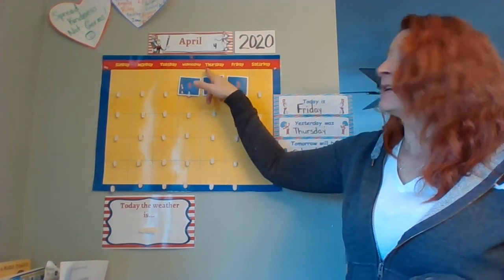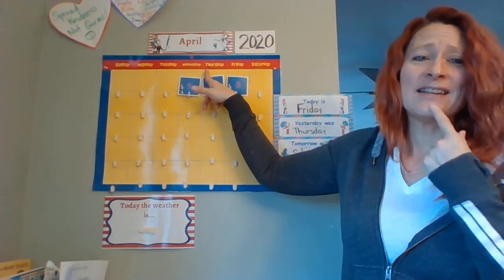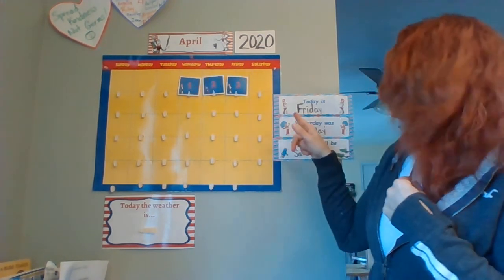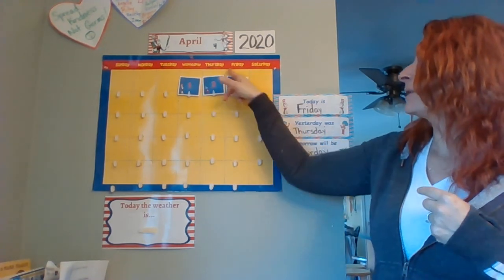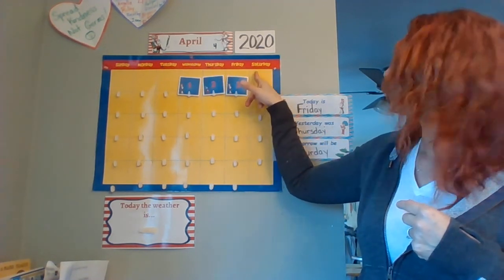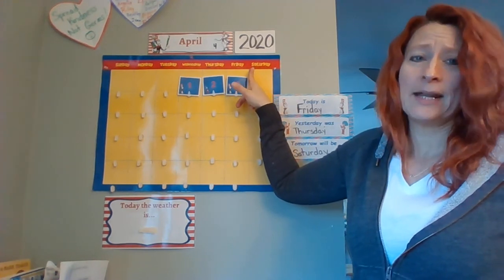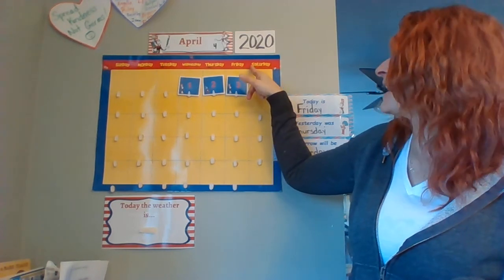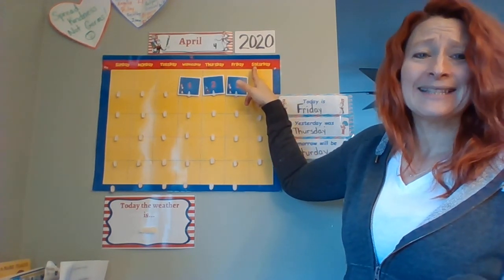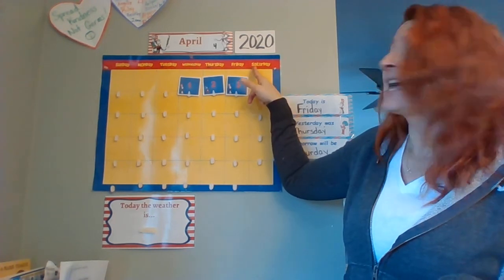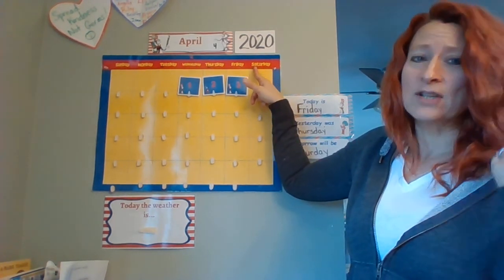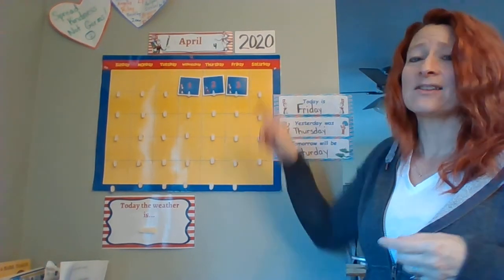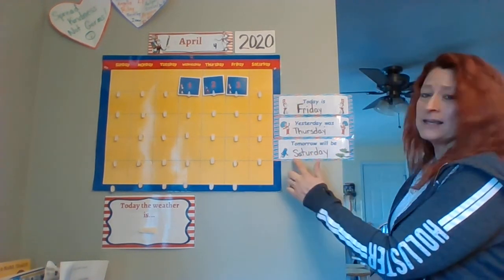Now we look back one day. We see that it starts with T-H. Is that stick your tongue out? So what day is that? Thursday. Yesterday was Thursday. Now we're going to jump from Friday to tomorrow. Oh, it starts with an S. We have two days that start with an S — Saturday and Sunday. So we look to the next letter and we see that it's an A. We got S-A-T. So by sounding out those first three sounds, S-A-T, we know that tomorrow is Saturday.